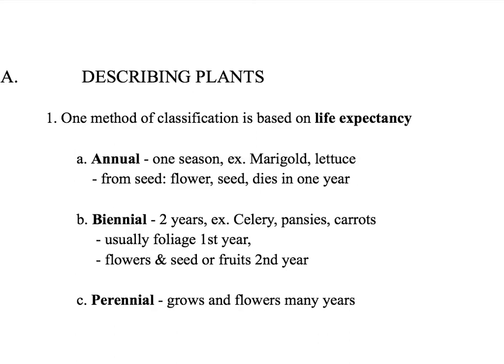The biennials are very similar to the annuals but it takes two years. Usually they do foliage the first year, flowering and seed the second year, and then their life is over. A perennial will keep on growing many many years. There's a wide range as far as the absolute length of life, but they live to a mature growth and then their life is over.